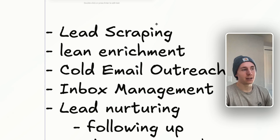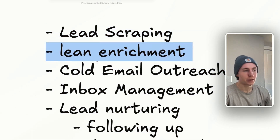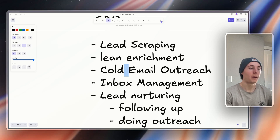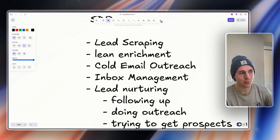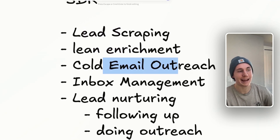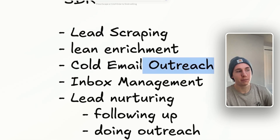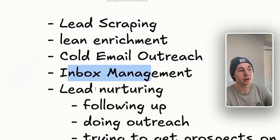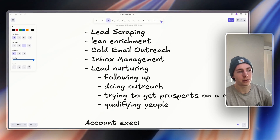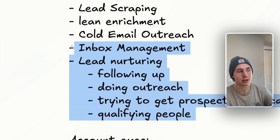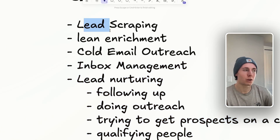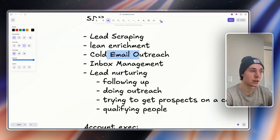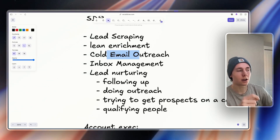When we think about lead scraping and lead enrichment, there are many different ways to go about this. Personally, I think that as of right now, the actual scraping, enrichment, and outreach is best done through workflows. When thinking about inbox management, nurturing, and getting people on a call — that's when the AI agent comes in handy. For scraping, lead enrichment, and cold email outreach, this is more what I talked about in some of my last videos.